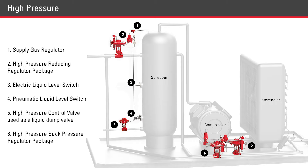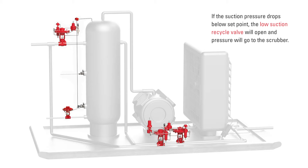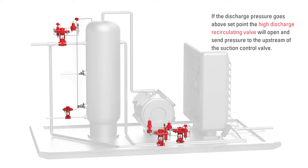You will need to know the basic flow and connections of a compressor when talking with a customer. Gas flow comes in through the suction control valve and into the scrubber. From the scrubber, it goes to the compressor, then through the cooling fan and out the discharge. If the suction pressure drops below setpoint, the low suction recycle valve will open and pressure will go to the scrubber. If the discharge pressure goes above setpoint, the high discharge recirculating valve will open and send pressure to the upstream of the suction control valve.